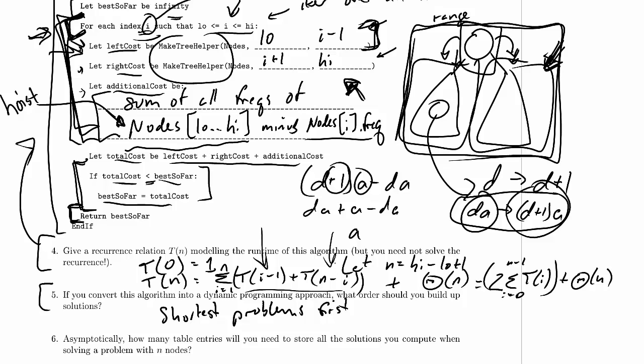And if you build that set of solutions up in an array, it looks kind of like the solution that the book did. So if we have low going up in this direction and high going up in this direction, the shortest arrays are going to be where high minus low plus 1 is equal to 1. So high is just a little bit larger than low.